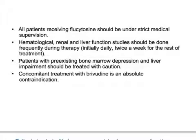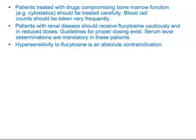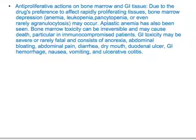Patients with pre-existing bone marrow depression and liver impairment should be treated with caution. Concomitant treatment with brivudine is an absolute contraindication. Patients treated with drugs compromising bone marrow function should be treated carefully, and blood cell counts should be taken very frequently. Patients with renal disease should receive Flucytosine with caution and in reduced doses, and serum level determinations are mandatory in these patients. Hypersensitivity to Flucytosine is an absolute contraindication.